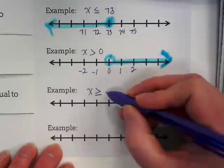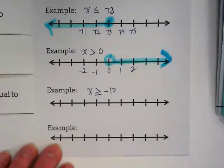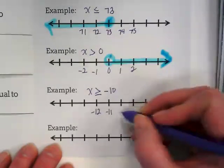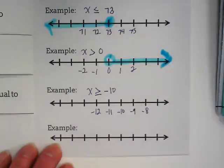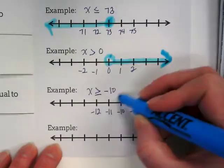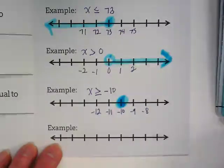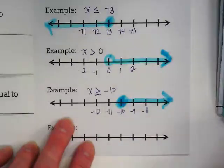X is greater than or equal to negative 10. What number are we circling? Negative 10. Open or closed circle? And it's greater than or equal to, so the line goes to the right. Do you see how the inequality symbol matches the graph if the variable is on the left?